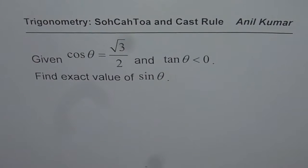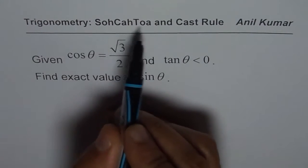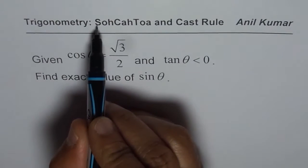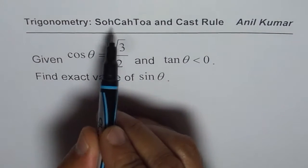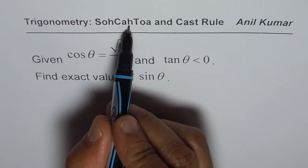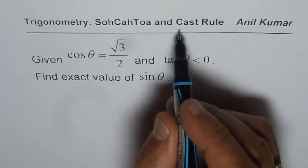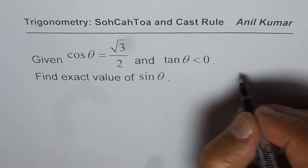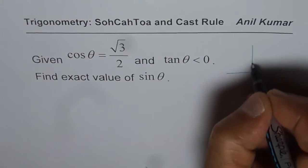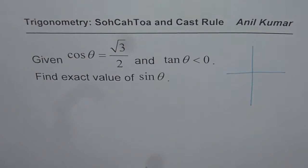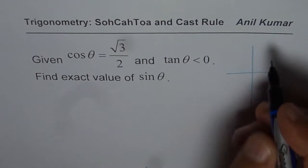I am Anil Kumar and in this video we will further explore applications of SOHCAHTOA and the CAST rule. SOHCAHTOA means sine is opposite over hypotenuse, cosine is adjacent over hypotenuse, and tan is opposite over adjacent. The CAST rule says in which quadrant each trigonometric ratio is positive.